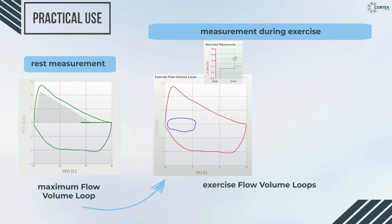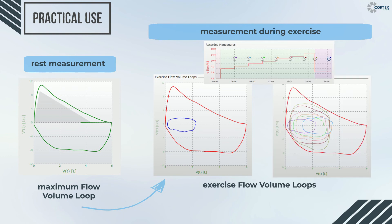the so-called exercise flow volume loops, thus providing us a conclusive picture on the dynamics of respiration under stress. By observing the ventilation curve for any disturbances of the loop, we could potentially diagnose stress-induced asthma.